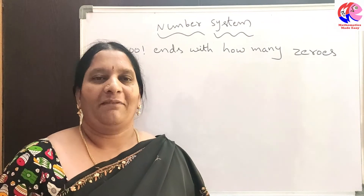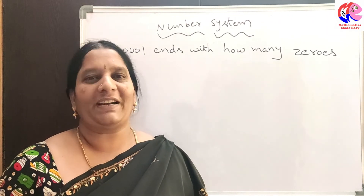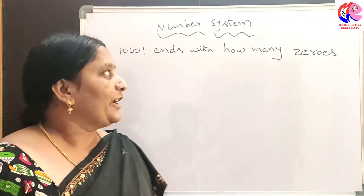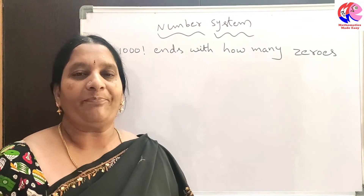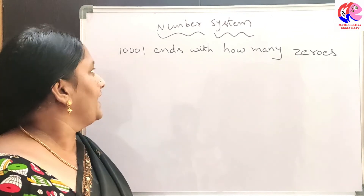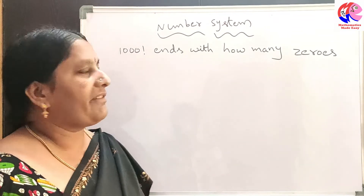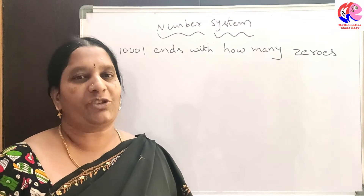Hello everybody. Welcome back to another session of Mathematics Made Easy. Today our topic is number system. I have received a question: 1000 factorial ends with how many zeros?